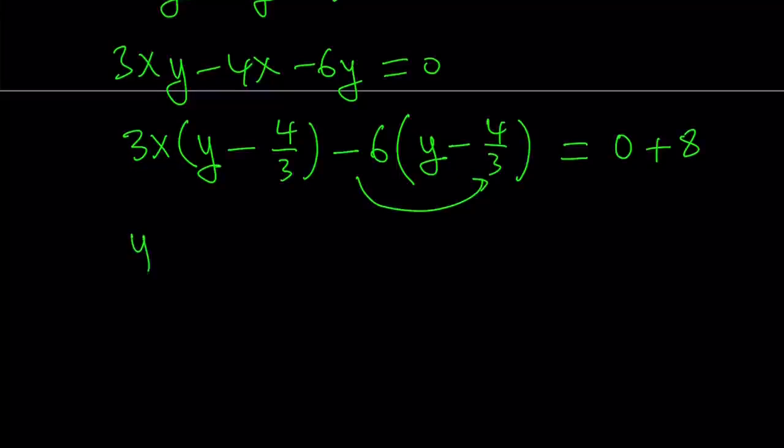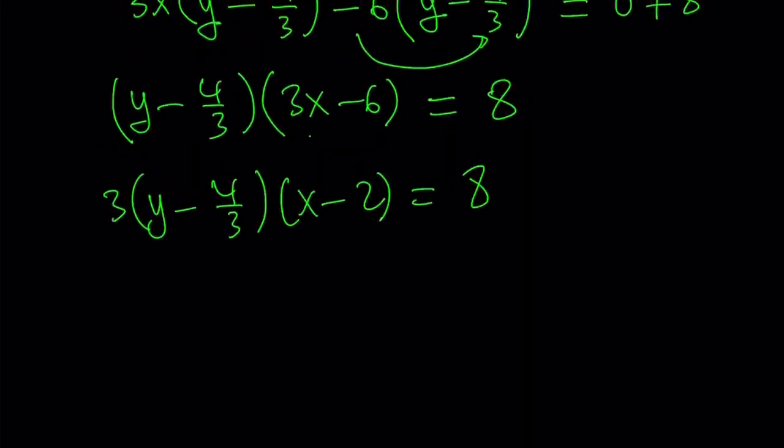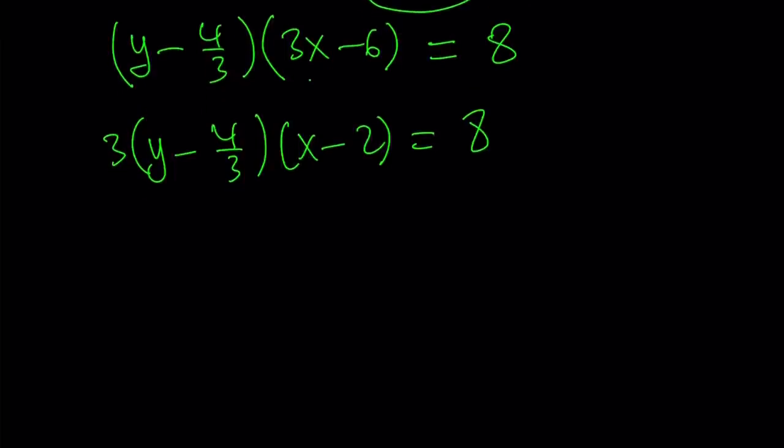Now y minus 4 thirds is a common factor and then the other factor is 3x minus 6 and the right hand side is 8. Not so great because we do have a 3 here but what we can do is we can take out a 3 here and multiply it by y minus 4 thirds. That's going to give us something nicer. If you distribute the 3 and even if you didn't have a 3 here, we could still take care of it by multiplying both sides by 3. We could distribute the 3 over the y minus 4 thirds. That gives us 3y minus 4 multiplied by x minus 2 equals 8.